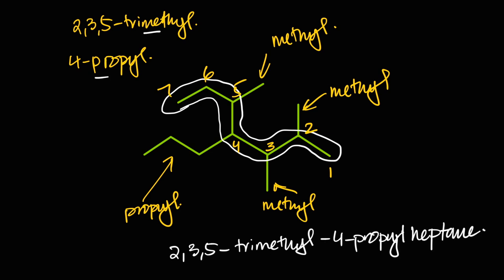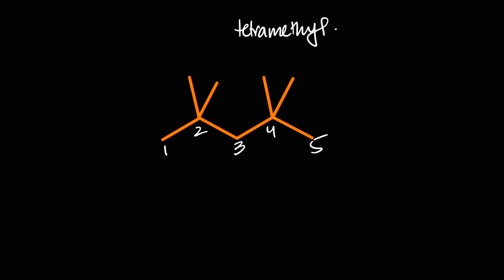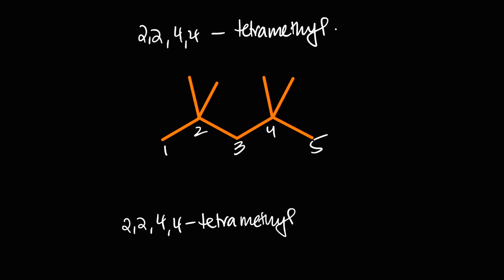For the last alkane example: a five-carbon chain with four methyl branches. The molecule is completely symmetrical, so counting from either side gives the same result — methyls on carbons two and four. With four methyl groups, it's tetramethyl, at positions 2,2,4,4. The five-carbon chain is pentane, so the name is 2,2,4,4-tetramethylpentane.